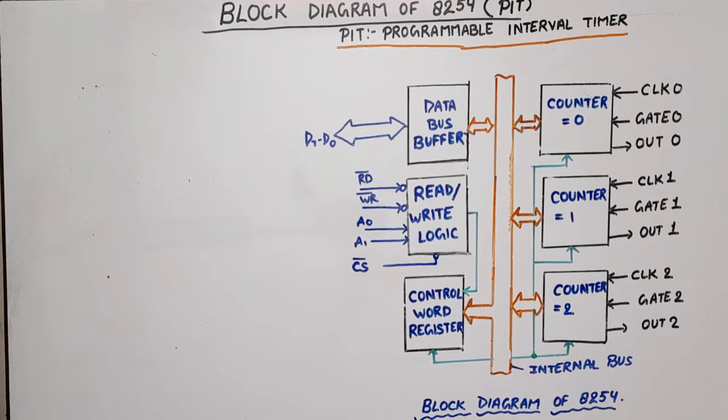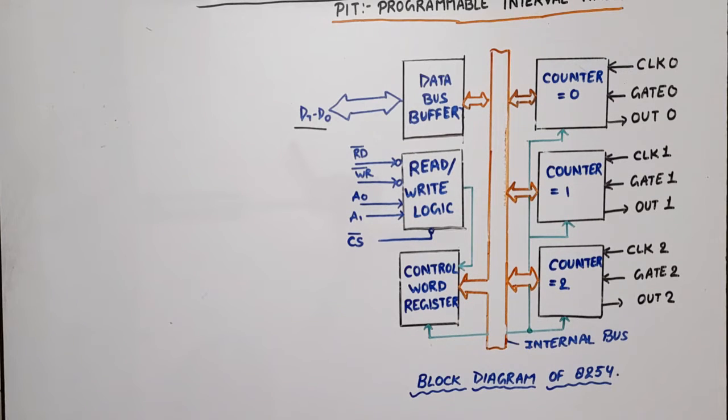It works as a software designed counter, means that the count values we load, all things are programmable. That's why this is called programmable interval timer. Now start its block diagram, we do the explanation of architecture of 8254 and 8253. So first we will discuss data bus buffer.